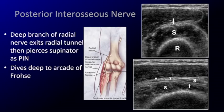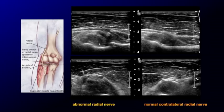The posterior interosseous nerve must be mentioned because it can mimic lateral epicondylitis — the nerve is also lateral. The radial nerve comes down and divides into a sensory and motor branch; the motor branch is the posterior interosseous nerve. It comes down and pierces into the supinator muscle. In this patient with lateral elbow pain but a normal common extensor tendon, the posterior interosseous nerve is thickened proximal to the area where it is compressed — just like the pinched garden hose. Compare this with the normal side: nice gradual normal appearance versus hypoechoic and thickened.